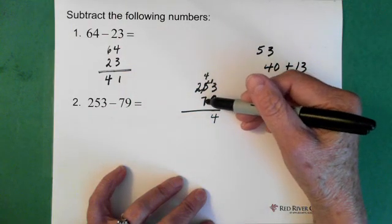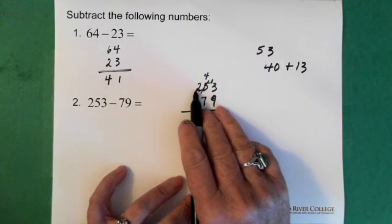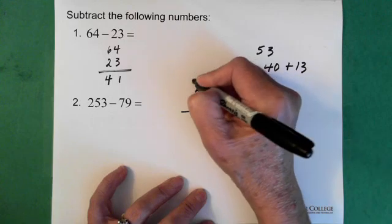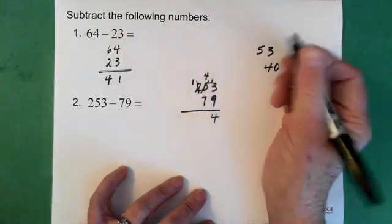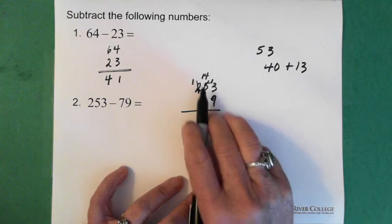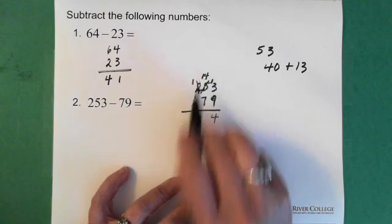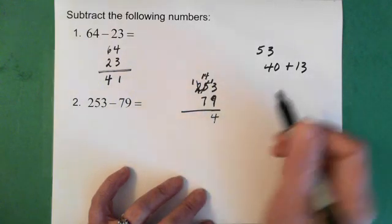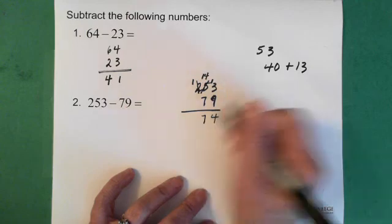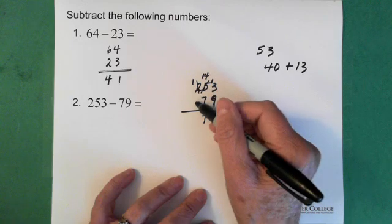Now, 4 minus 7 can't do it. So then we do the same thing. We just go up another 10, so go up to the 100's position. Borrow from there. So this becomes then a 1. And we borrowed from the 100's position to make this a 14. So then we take our 14 minus the 7 and we get a 7. Now we're left with a 1 in the 100's position, and a 1 minus 0 is 1.